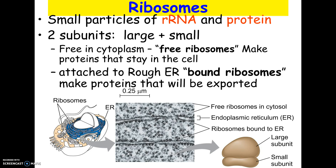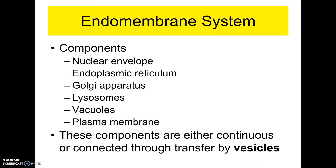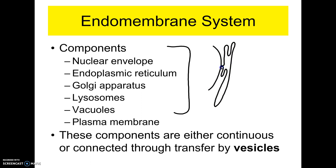All of these organelles — the nuclear envelope, the ER, Golgi apparatus, lysosomes, vacuoles, and the cell membrane — are part of what's called the endomembrane system. They're called that because pieces of each one are made of membrane just like the cell membrane, and pieces of each can break off and become part of other structures.